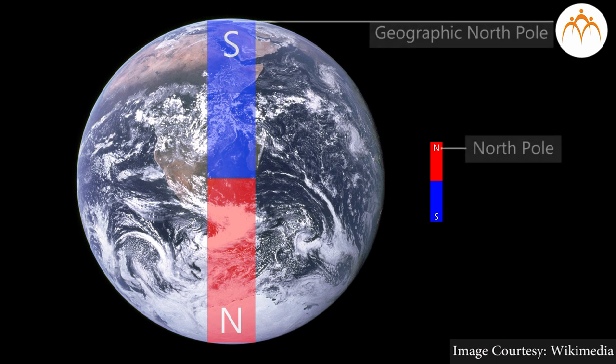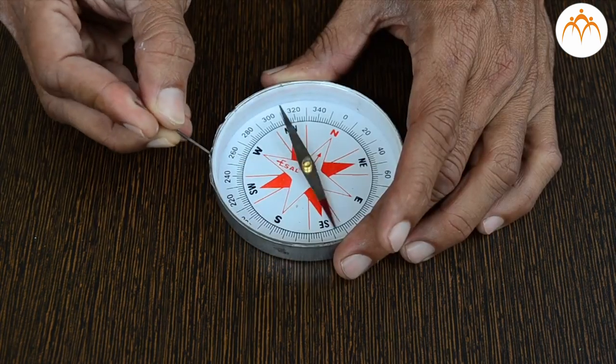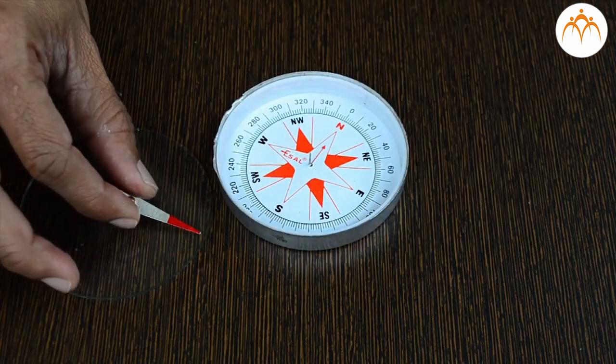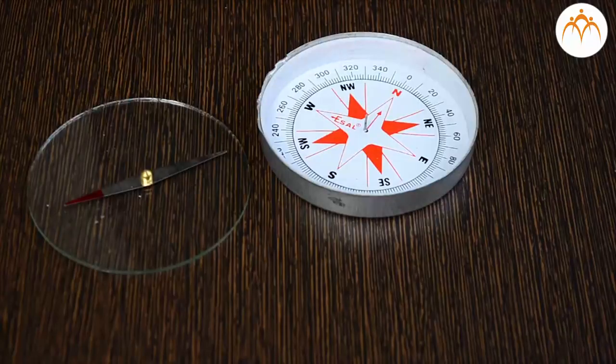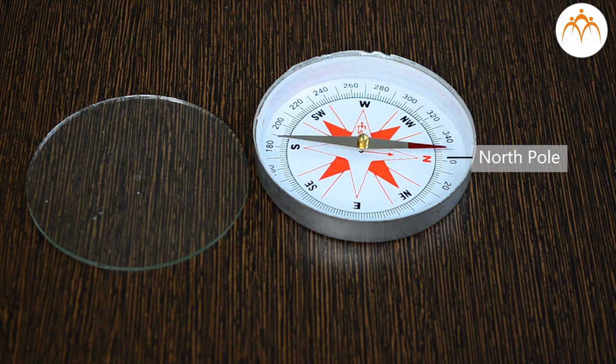Conventionally, that end of the magnet which is pointing in north direction is called north pole. You cannot see magnetic field of Earth, but you can see its effect with the help of magnetic compass. Compass contains a tiny magnet that can swing around freely. One end always points to Earth's north pole while the other points to south pole.